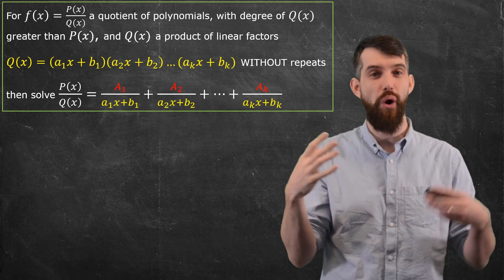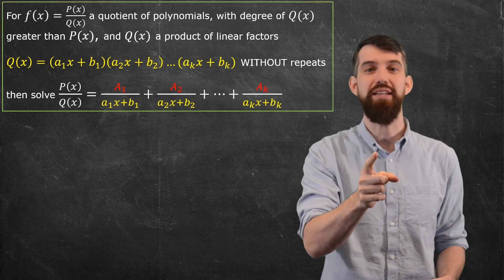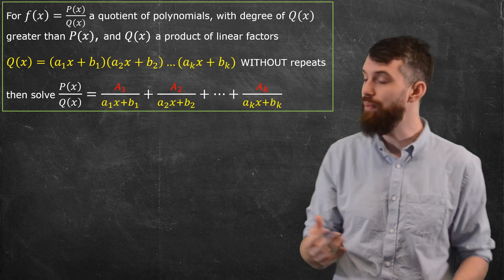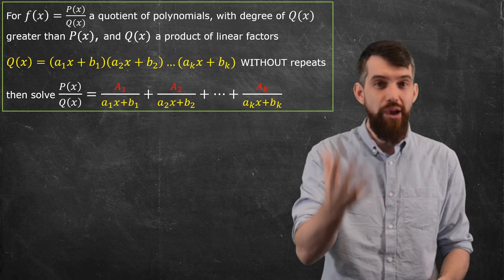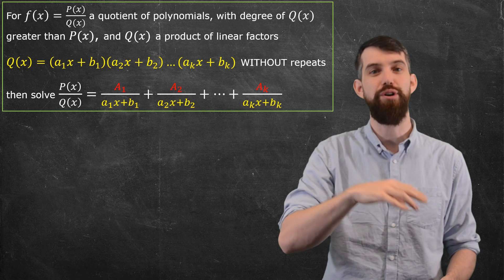It was a bunch of linear factors all multiplied out, and none of them repeated. And if that is the case, then the algebra you want to try to do makes it look like a bunch of constants, an a1 over the first linear term, plus an a2 over the second linear term, and so on.